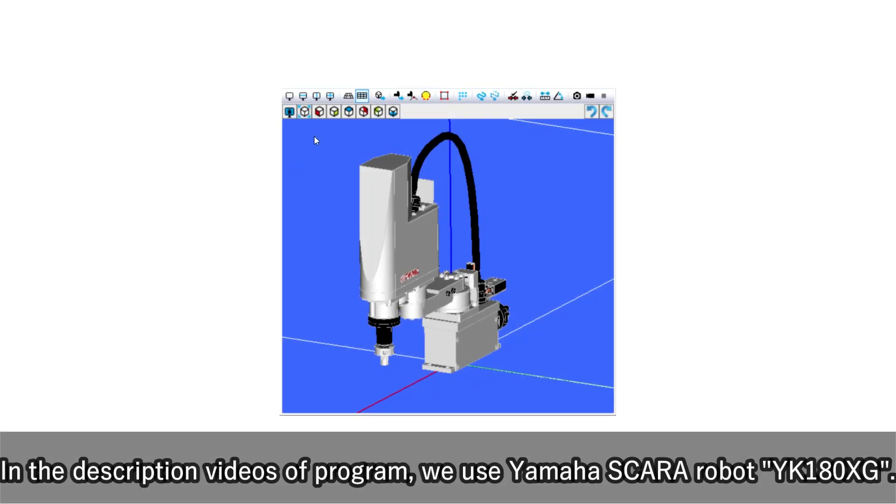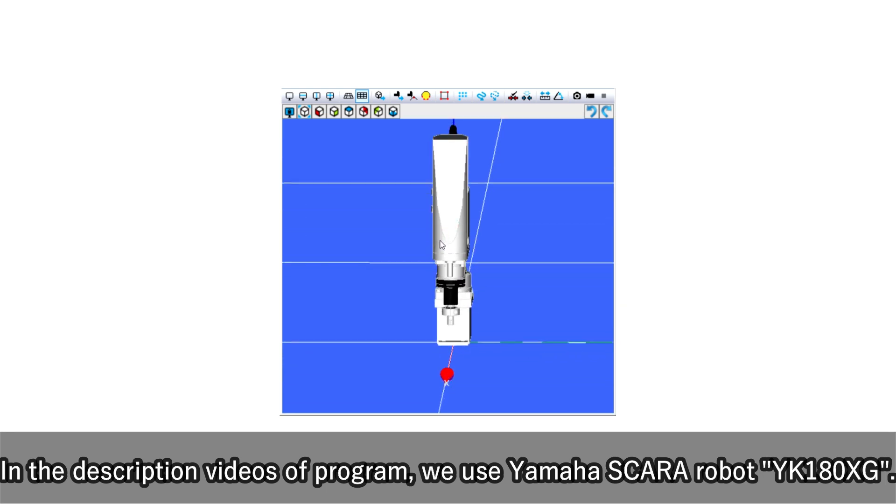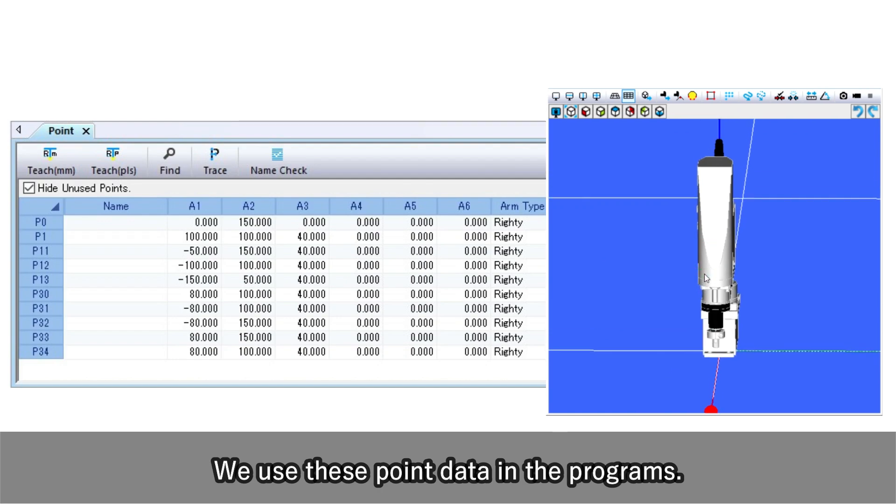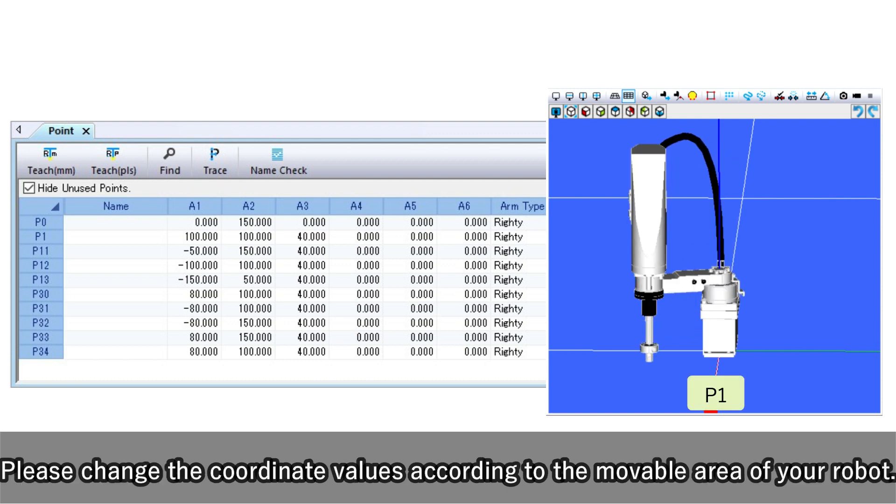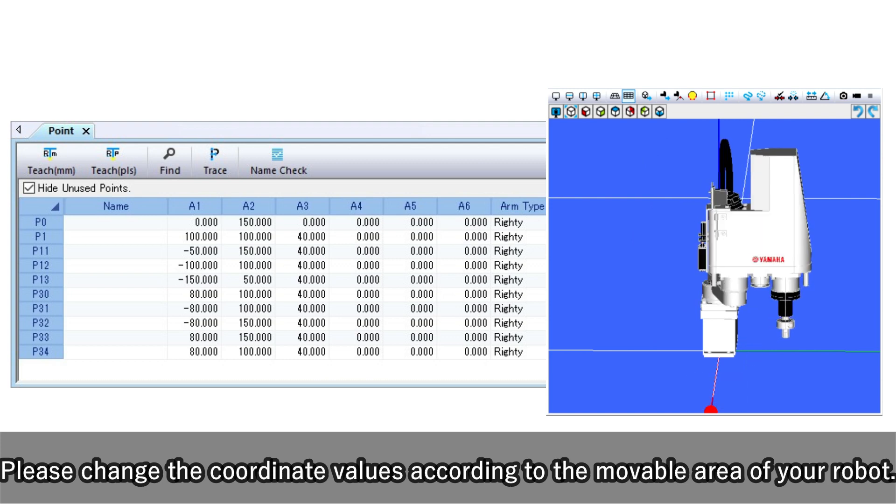In the description videos of program, we use Yamaha SCARA robot YK180XG. We use these point data in the programs. Please change the coordinate values according to the movable area of your robot.